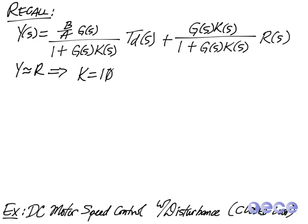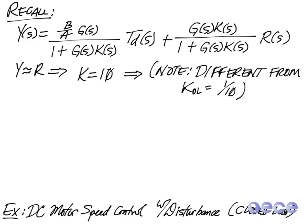So in order to see why we choose this differently, the reason is because we want R of s to be approximately equal to Y over s. So if we choose TD of s equal to 0, then Y of s is just the R of s term.